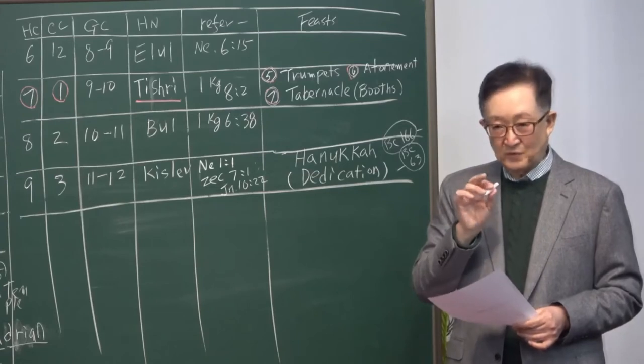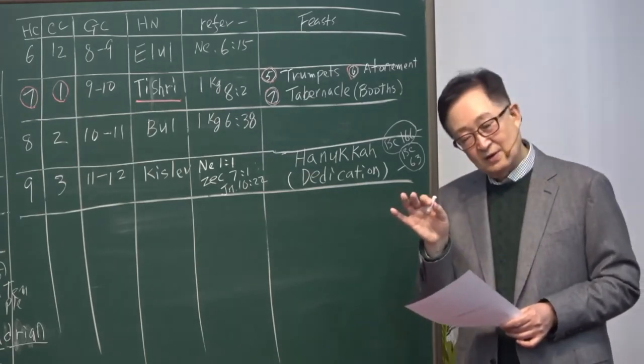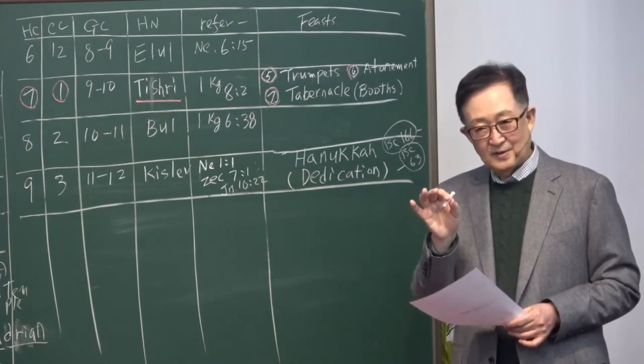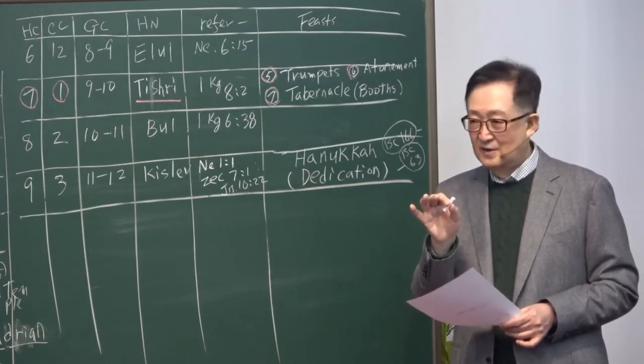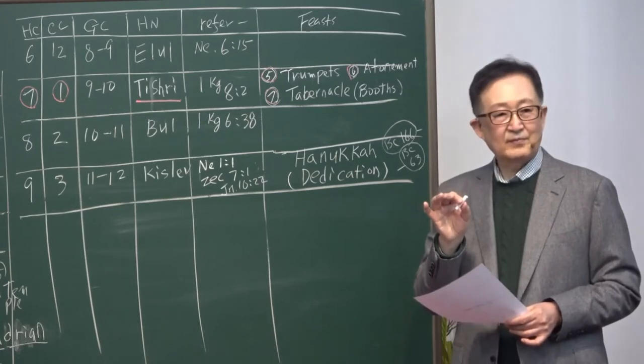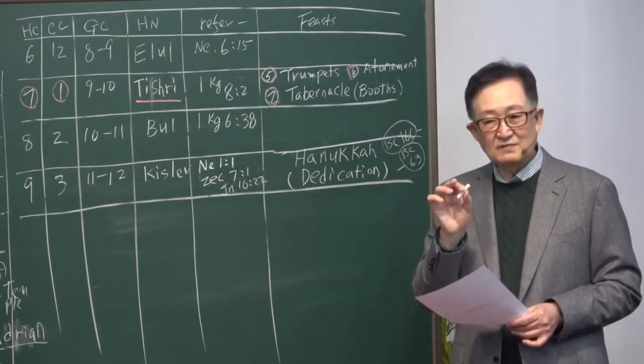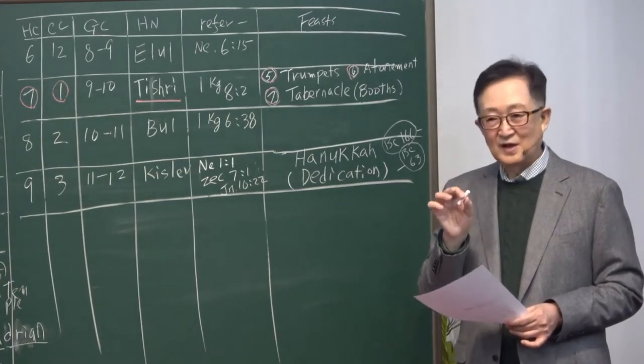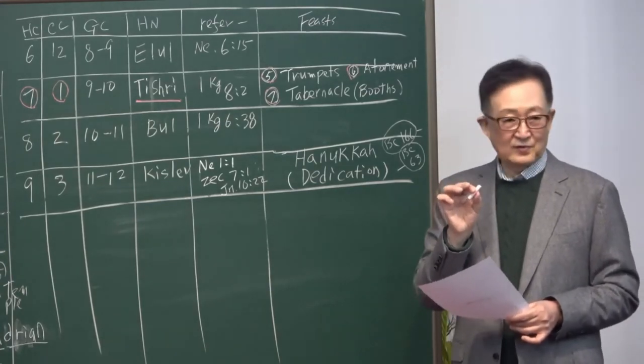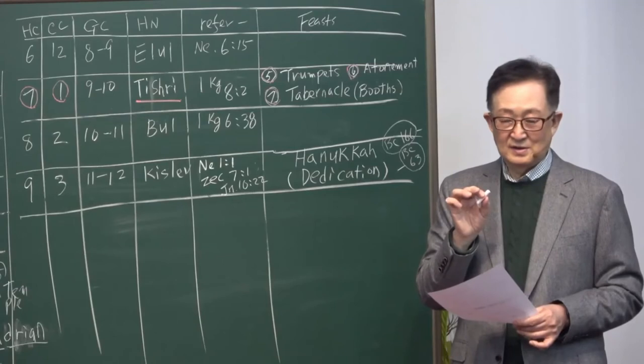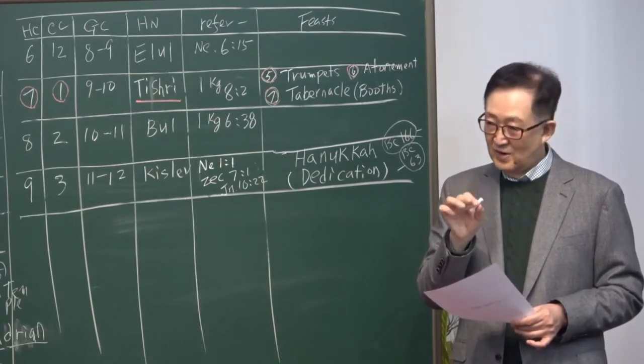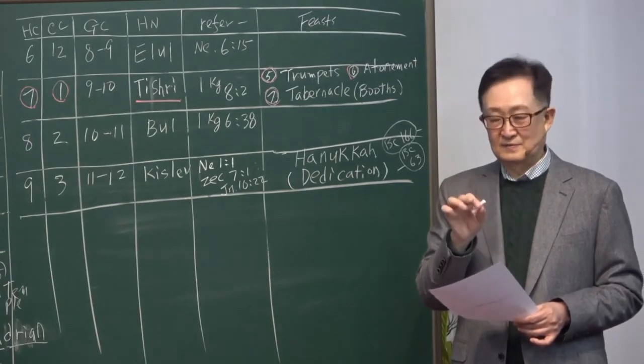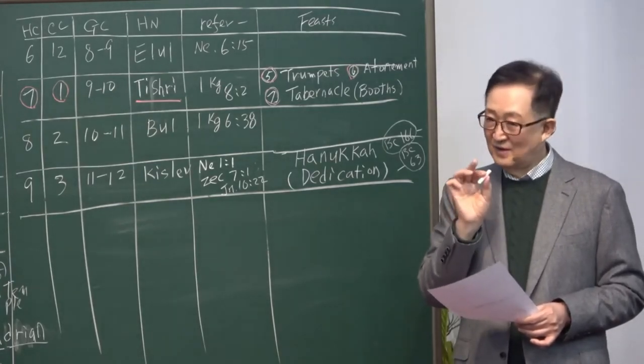Actually, BC 166 to BC 63, when Israel became controlled by the Roman Empire, in the history of Israel, first time in their history, the nation was totally independent, not controlled by any foreign forces. So starting 163 all the way to 63 before Christ.